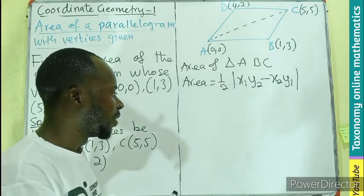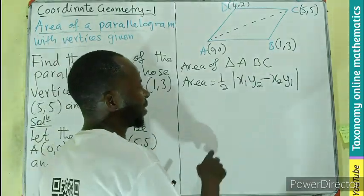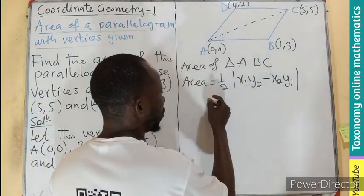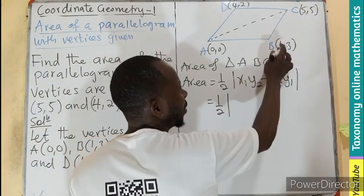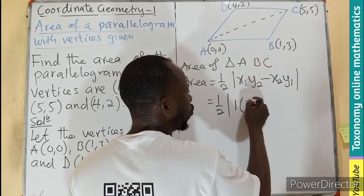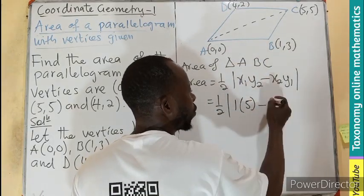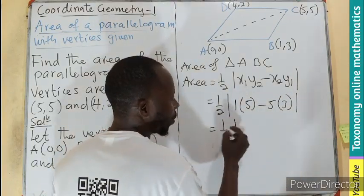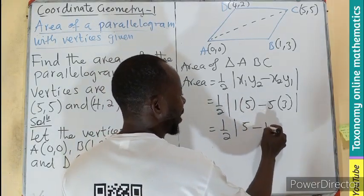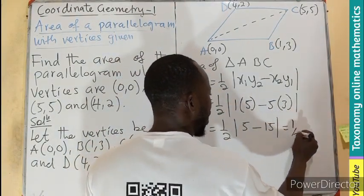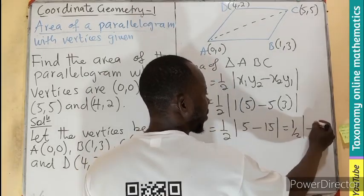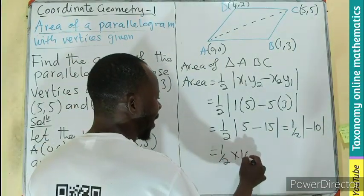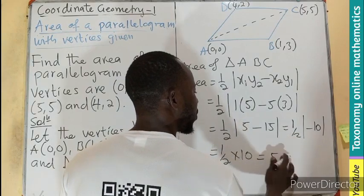In this case, this is the origin, so this will be your x1, y1, x2, y2. Area equals half times the absolute value of x1, which is 1, times y2, which is 5, minus x2, which is 5, times y1, which is 3. This will be 5 minus 15, which equals half times the absolute value of negative 10, and that gives you half times 10 equals 5 square units.